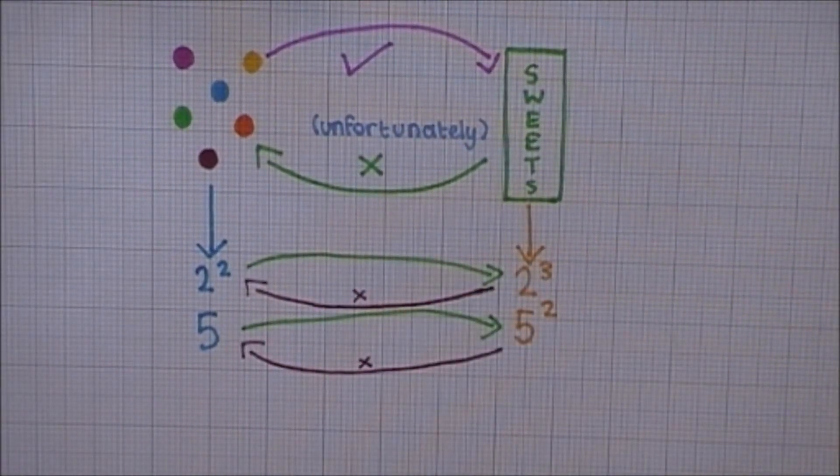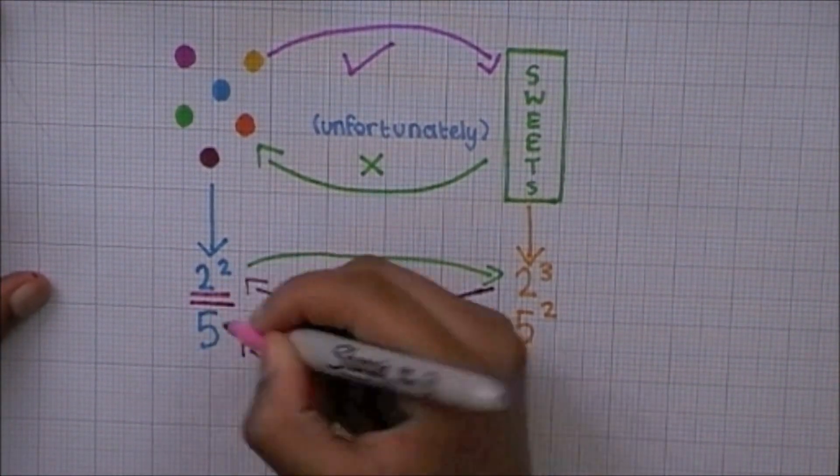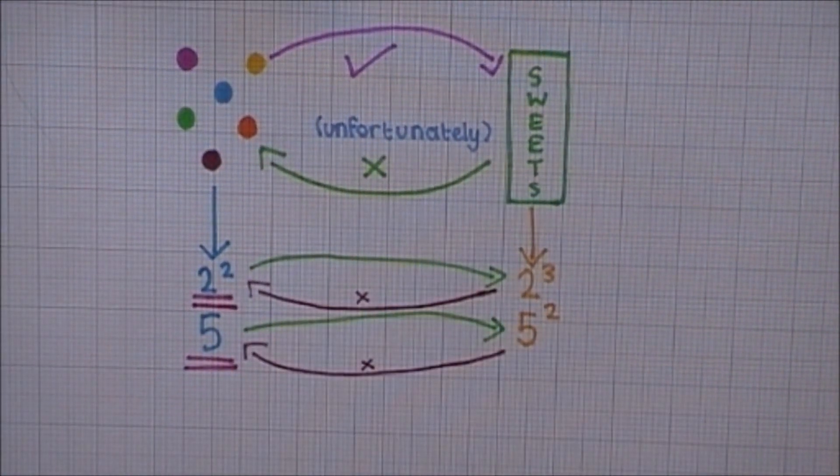Just like the packets of sweets, they are too big. This is why we can only use 2 to the power of 2 and 5 to give us our answers for the HCF.